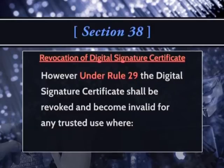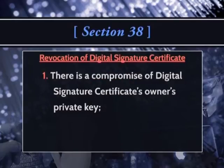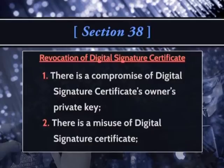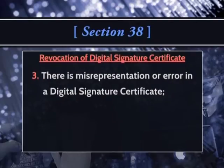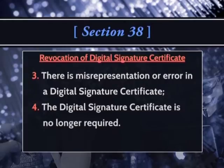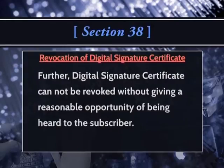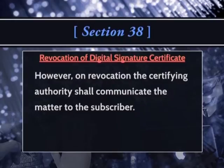Under Rule 29, the digital signature certificate shall be revoked and become invalid for any trusted use where there is a compromise of the certificate owner's private key, or there is a misuse of the digital signature certificate, or there is a misrepresentation or error in the certificate, or the digital certificate is no longer required. A digital signature certificate cannot be revoked without giving a reasonable opportunity of being heard to the subscriber. On revocation, the certifying authority shall communicate the matter to the subscriber, and the revoked certificate shall be added to the certificate revocation list.